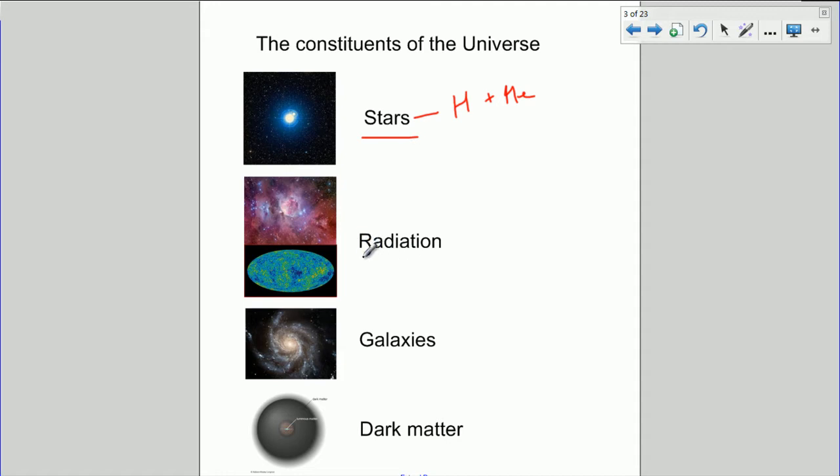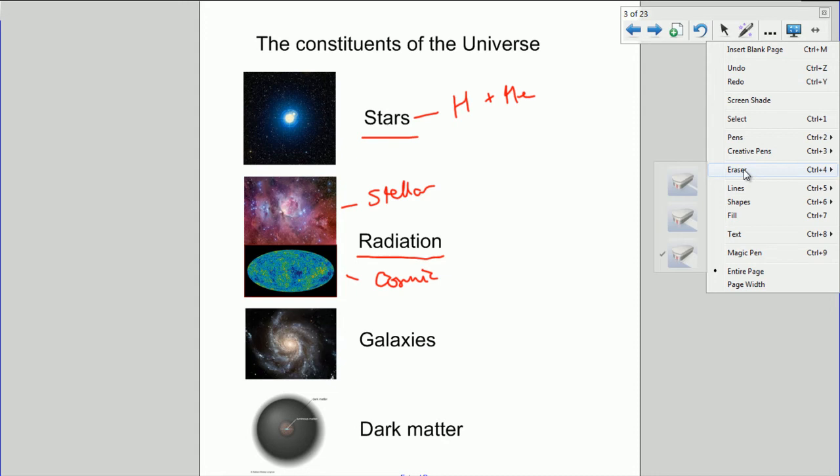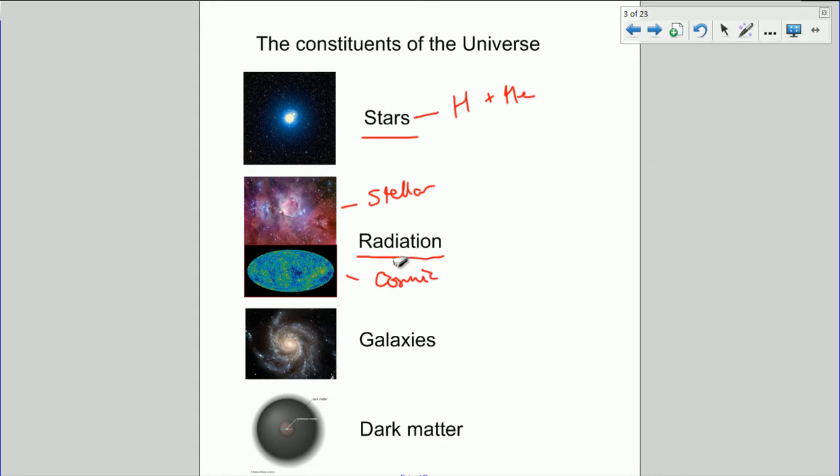Then we've got radiation. Radiation forms a large part of the mass energy balance of the universe. This is more energy we're talking about rather than matter now. There are two main types of radiation. There's what we call stellar radiation, which comes from stars. Stars obviously radiate quite a lot of radiation. But there's also cosmic radiation. And cosmic radiation can be the leftover energy from the Big Bang, for example, or other things like that. Cosmic radiation.